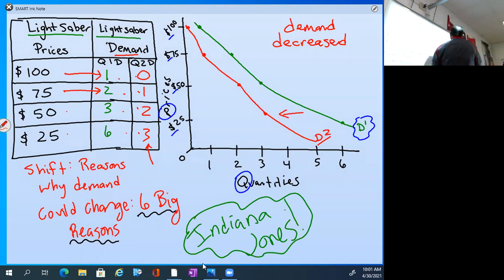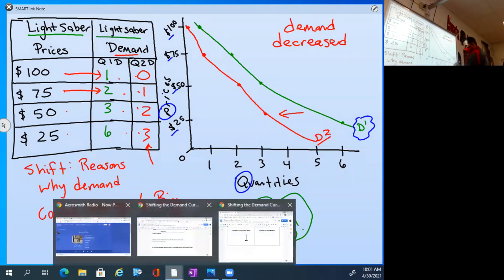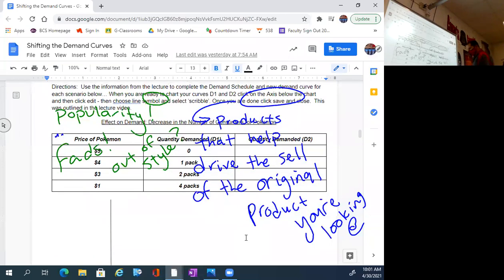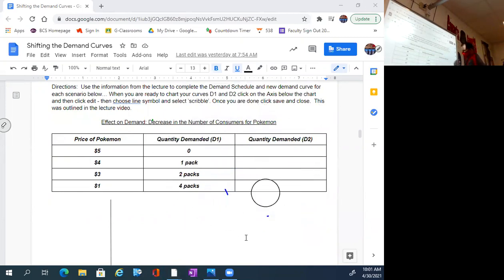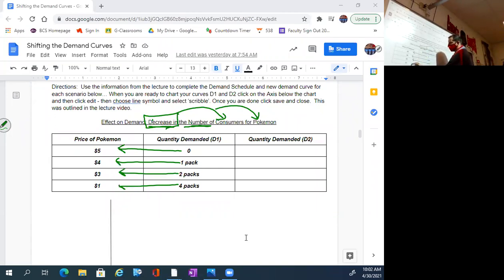So now what you're going to do, now I'm going to give you these scenarios. Check this out. I've given you a scenario for each one. And I've given you some information. And I want you to use the original information to track and just tell me, is demand going to go up or down? Look at the first one on your paper. Decrease the number of consumers for Pokemon. The number of consumers has decreased. Pokemon used to be really, really big about 10 years ago. But it's still big, but it's not as big as it was, right? So there's not as many consumers for Pokemon. So at these prices, is Pokemon going to go up in demand or down in demand? Very good. I see a lot of down.